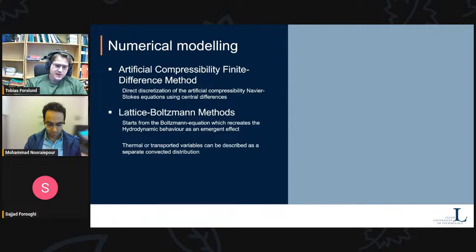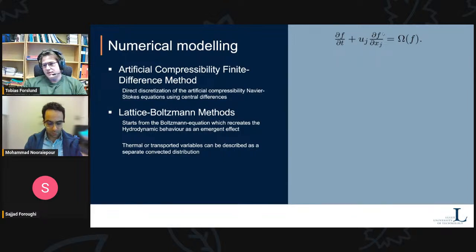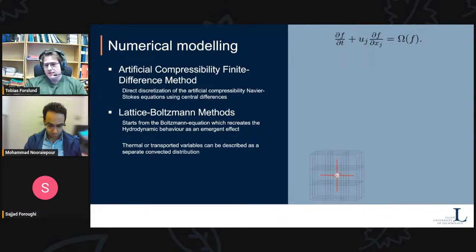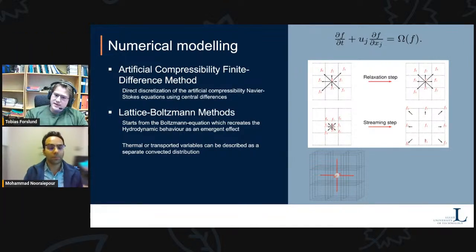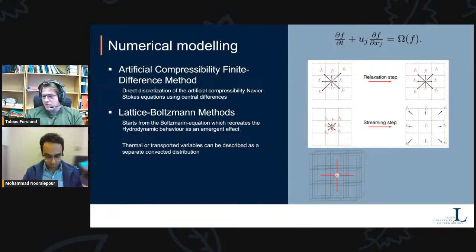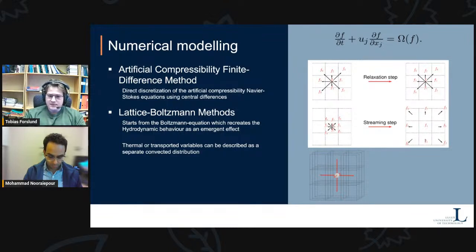The method I use most often is the lattice Boltzmann method, or LBM. These methods start from the Boltzmann equation, which looks like a convection-diffusion equation depending on how you define the omega function on the right-hand side. The hydrodynamic behavior is recreated as an emergent second-order effect. Computations are typically subdivided into two steps: a relaxation step, where you apply an operation on the velocity distributions within each node, and a streaming step, where information is exchanged between nodes. This procedure is especially appropriate for GPU implementation, which is why LBM has garnered such wide application in this community.